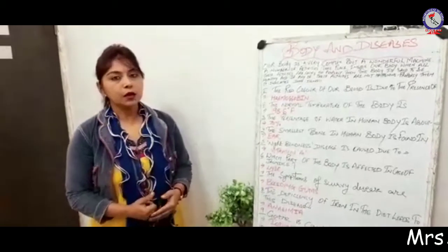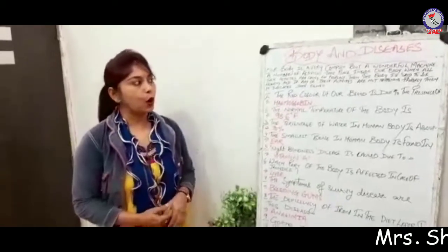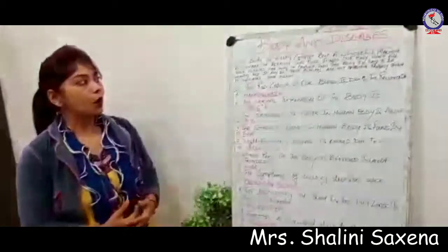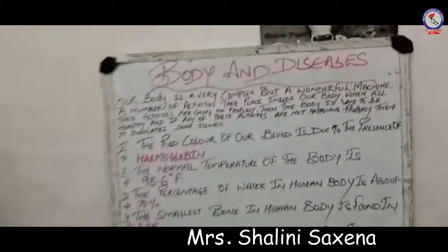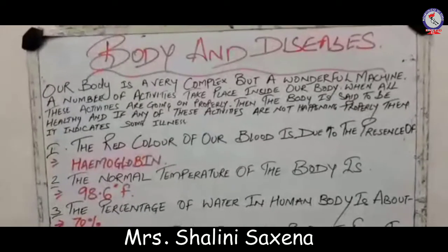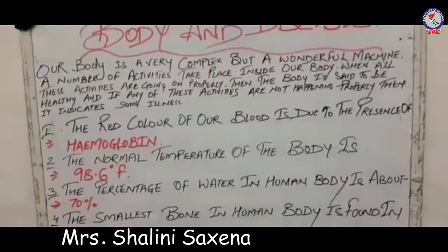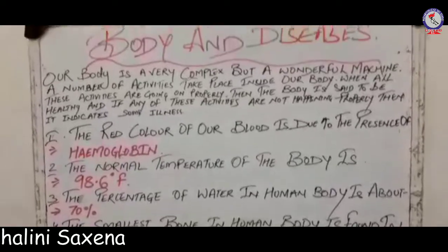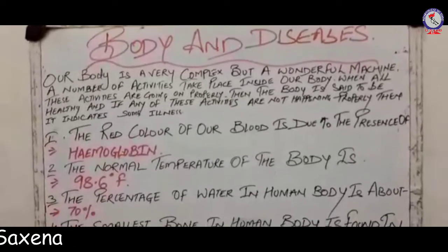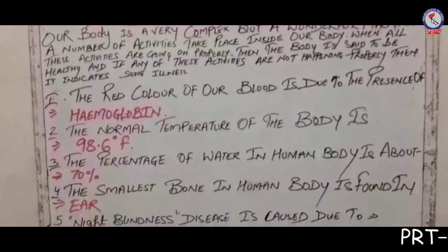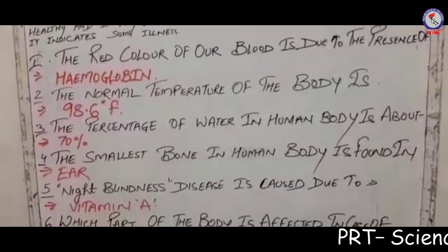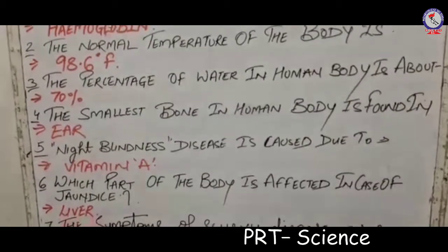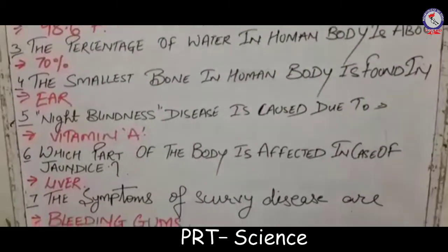Hello students. Today our topic is body and diseases. Our body is very complex but a wonderful machine. A number of activities take place inside our body. When all these activities are going on properly, then the body is said to be healthy. And if any of these activities are not happening properly, then it indicates some illness.